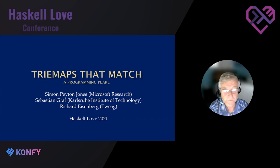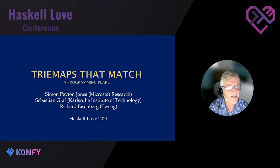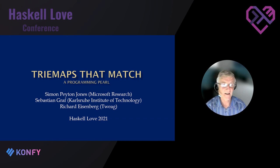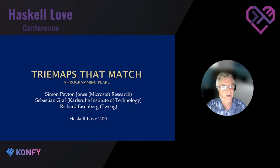This talk is about a little data structure — tries — that kind of everyone knows about but aren't so widely used in functional programming. Think of it as a tutorial; this isn't really a research talk, so I've subtitled it a programming pearl. I wrote it in collaboration with my friends Sebastian Graf and Richard Eisenberg. Please follow along — I'm going to show quite a bit of code. Write questions in Discord; I'd much rather have a dialogue as we go along rather than save it all to the end.